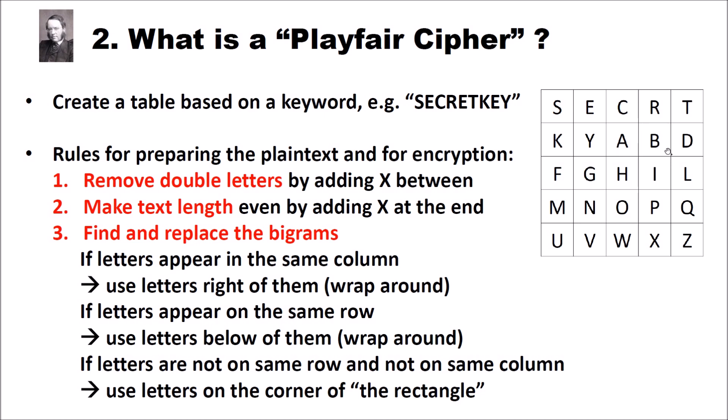There are rules for preparing the plaintext before encryption. First, we remove double letters by inserting an X between them — so AA becomes AXA, BB becomes BXB, and so on. Then we make the plaintext length even by adding an X at the end if necessary, because Playfair works on bigrams and the plaintext must be of even length.